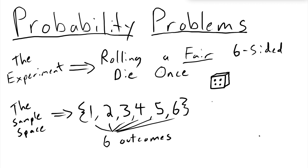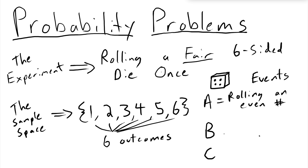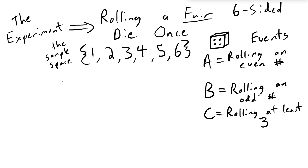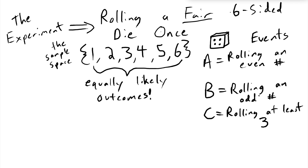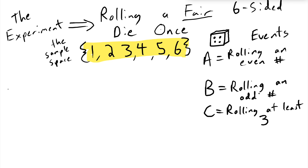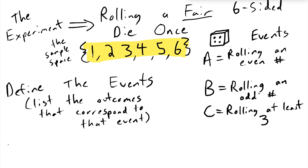Now I'm going to define three events. A is going to be rolling an even number. B is going to be rolling an odd number. And C is going to be rolling at least a three. Before we go any further, let's remind ourselves that these outcomes are all equally likely. The first thing we might ask is to define these events.